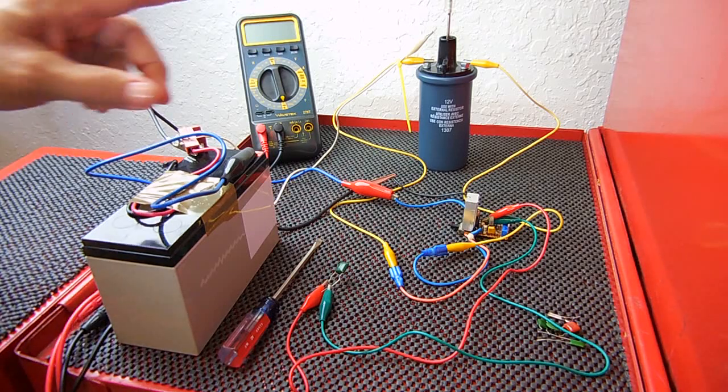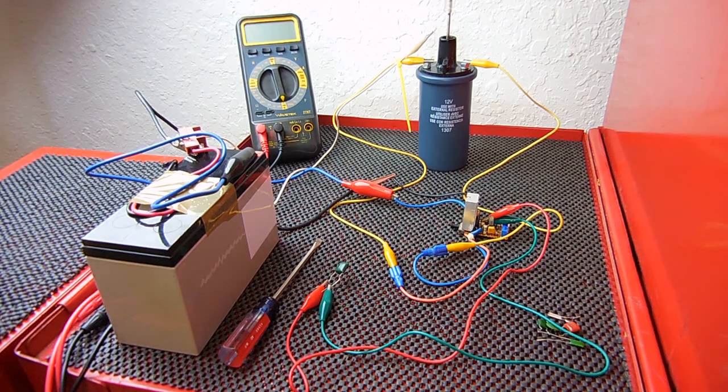The ignition coil I picked up at an auto parts store. I looked for the cheapest one available, and it happened to be for a '67 Ford Mustang. I paid around $17.50 for that coil.